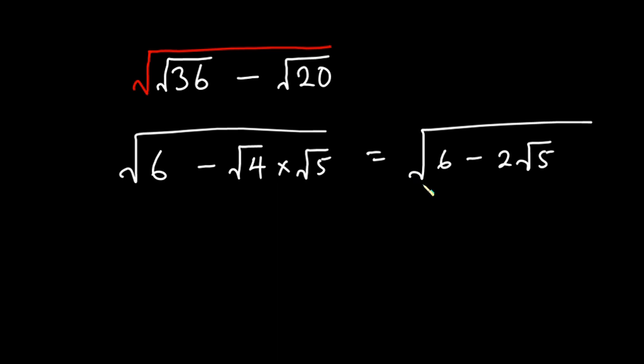Now you can see we can't simplify anything again, so what we're going to do is remember one of the identities, which is (a minus b) squared equals a squared plus b squared minus 2ab.